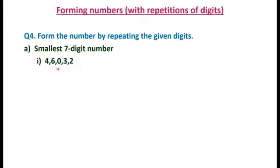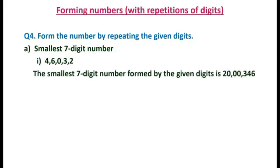We need to repeat the smallest digit. Zero is the smallest digit, and since we have only five digits but need seven, we repeat zero two more times. We cannot write zero at the leftmost position, so we write 2 first — the digit just greater than zero — then write zero repeated two more times, followed by 3, 4, and 6 in ascending order.